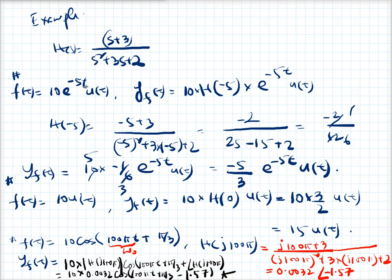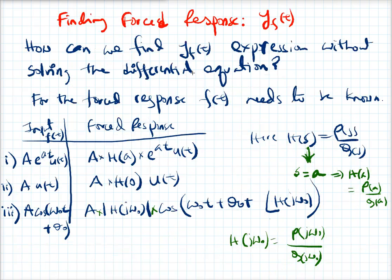So f(t) equals 10e^(-5t)u(t). This is an exponential function with an exponent of minus 5. That means the forced response will be 10H(-5)e^(-5t)u(t). And this is the nature of the forced response. We did not derive the formula for this; we just gave you in the last slide.